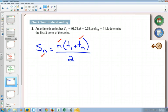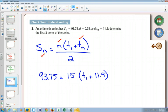So let's do that. Let's plug things in. 93.75 equals n would be 15 because I'm doing S15. Term 1 I don't know, but I do know term 15 is 11.5 divided by 2.